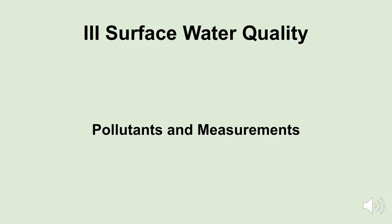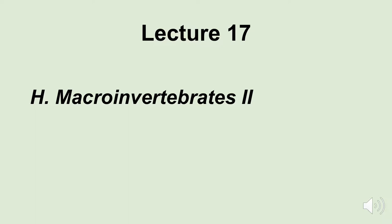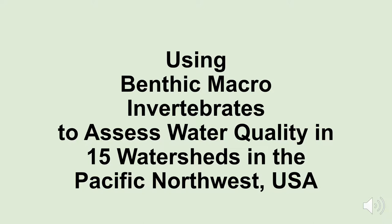In this series of lectures we've talked about nutrients, sediments, erosion on land, we've spent two lectures on eutrophication, we talked about temperature, and now we're spending two units on macroinvertebrates. In the last lecture I introduced the topic of macroinvertebrates — what they're good for, what they're indicators of — and today I'd like to show you some actual research with macroinvertebrates to show you how macroinvertebrate numbers actually relate to some real-world measurements.